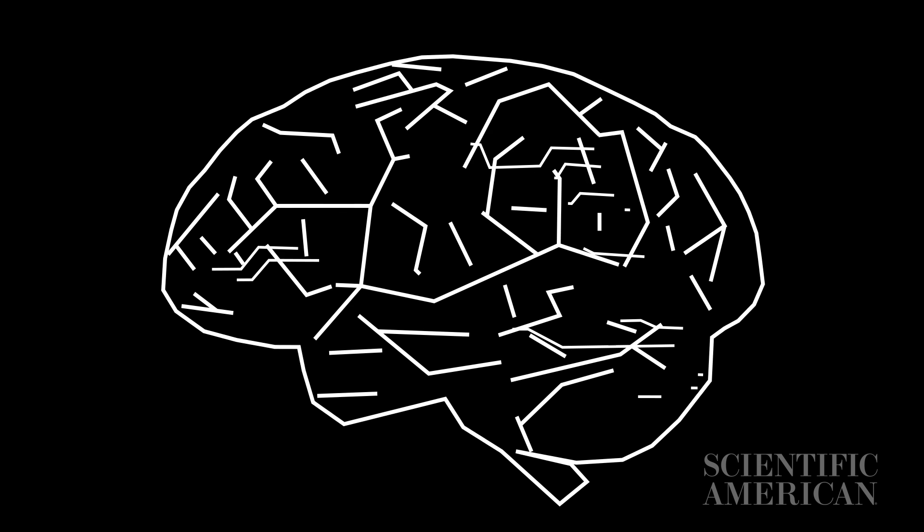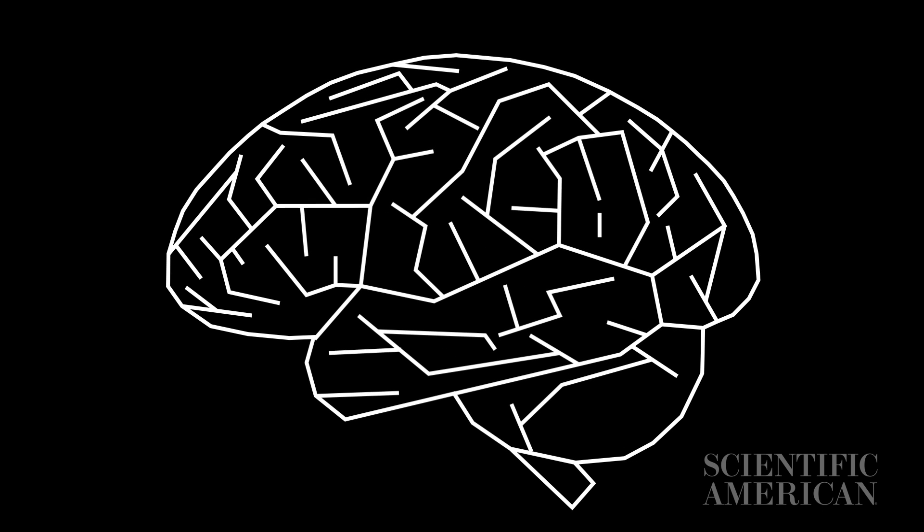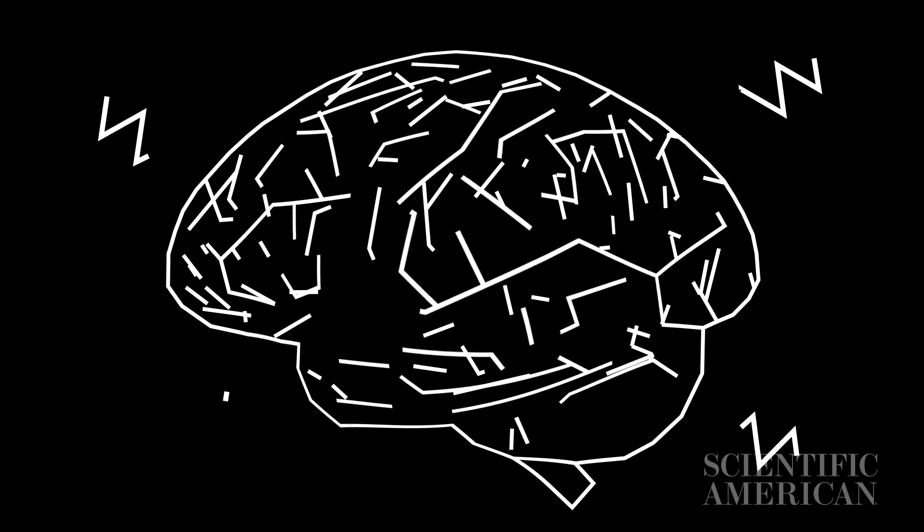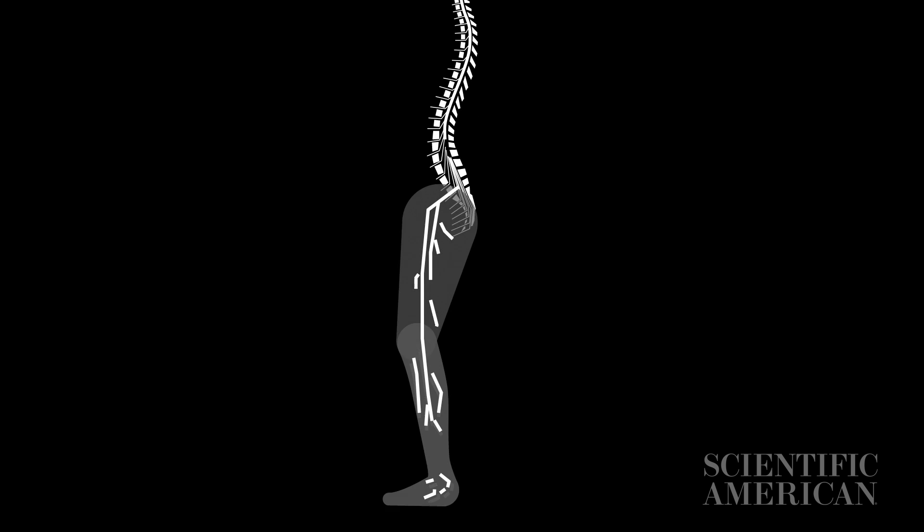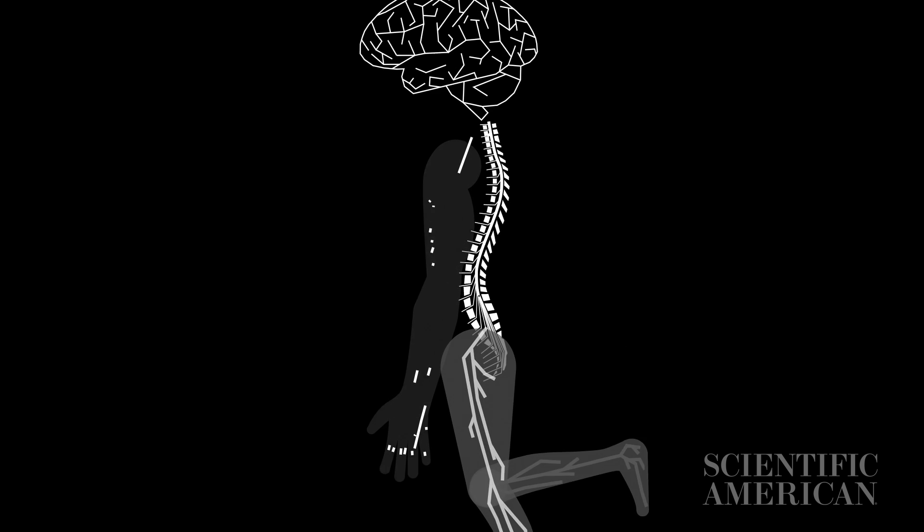And because neurons communicate through electrical signals, we can directly alter brain circuits with electrical stimulation. Scientists have found ways to stimulate the brain and spinal cord to restore function to paralyzed muscles and relieve chronic pain.